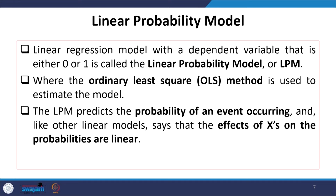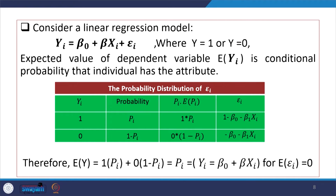The linear probability model (LPM) has linearity in its responses where the ordinary least square method is applied. The LPM predicts the probability of an event occurring, and like other linear models, says that the effects of x_i on the probabilities are in fact linear.